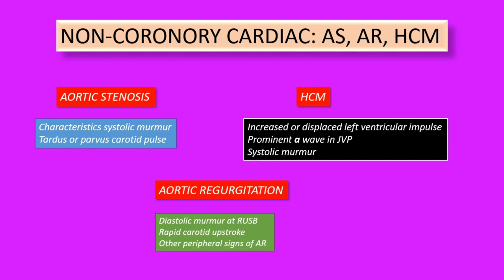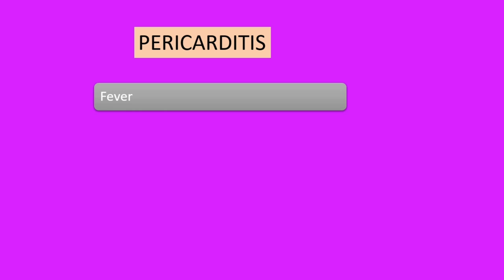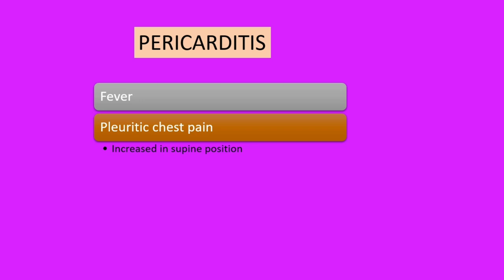Pericarditis is another entity that can present with acute chest pain. These patients usually have ongoing fever or a history of febrile illness. In addition, there is pleuritic chest pain — also known as pericarditic chest pain — that increases in the supine position, and a pericardial friction rub can be heard on auscultation of the precordium when the inflamed surfaces rub against each other, producing a characteristic sound.